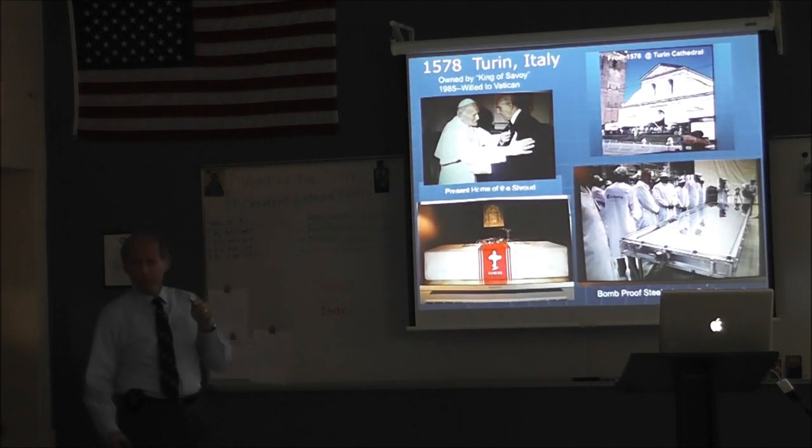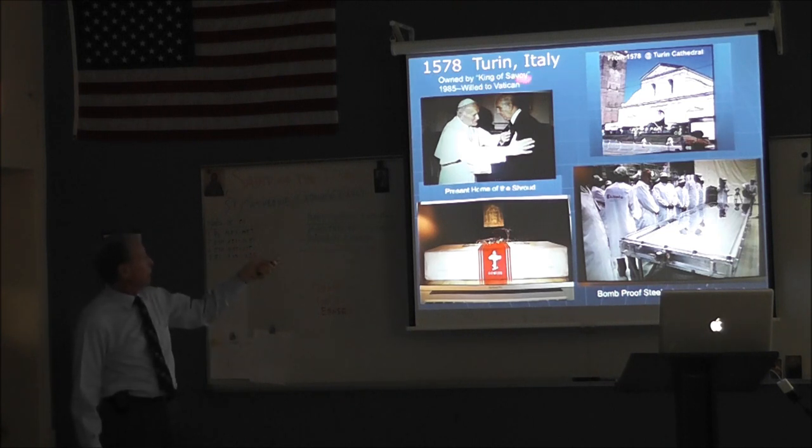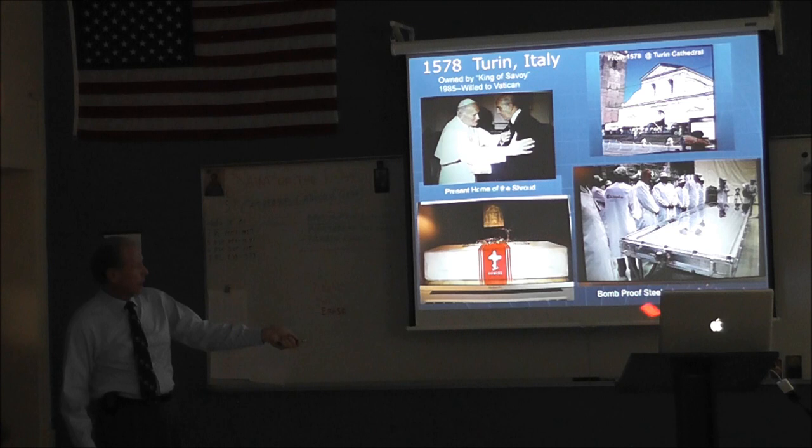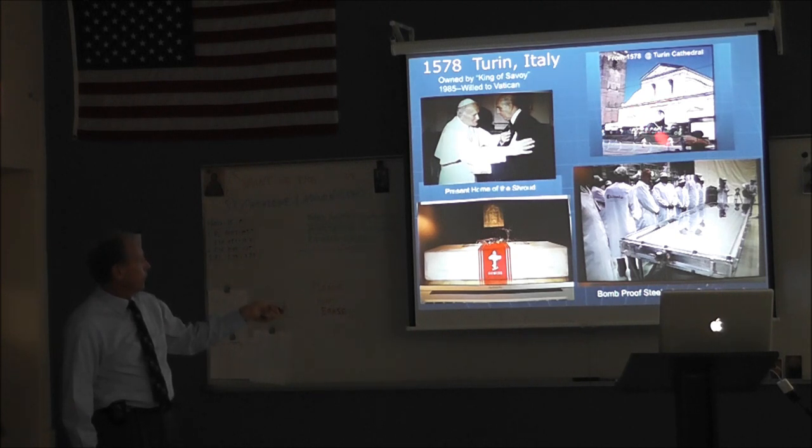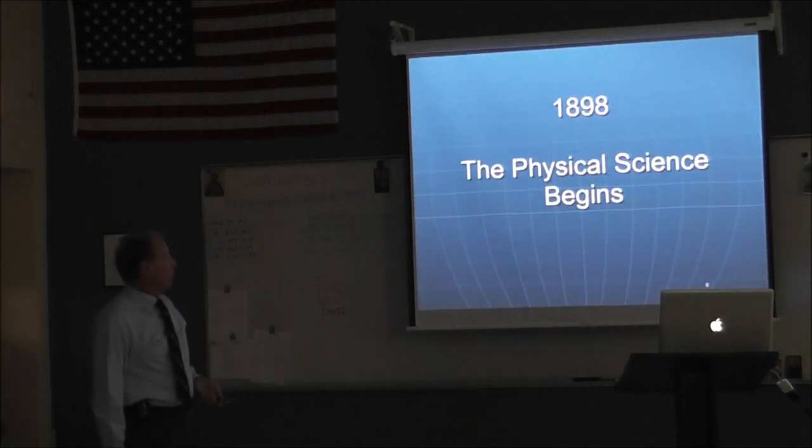This is the ownership. The king of Italy, the king of Savoy, Italy, owned it until late 1985, when he gave it to the Vatican. Here he is, Pope Paul, John Paul II, receiving it. This is what it looks like now when it's not under exposition. It's inside this case. Steel case. Heavy, heavy glass. Bomb proof. And it has argon gas. So the material won't degenerate. And this is the outside of the cathedral in Turin. This is a picture from the exposition. I think that was more like 1978, though.